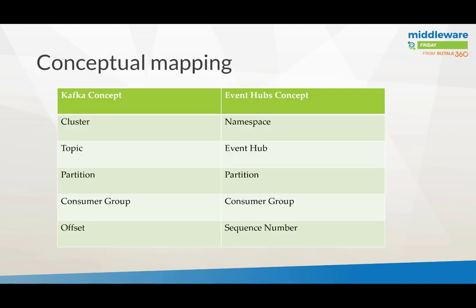If you conceptually map Kafka versus Event Hubs, the concepts align: clusters map to namespaces, topics map to Event Hubs, partitioning and consumer groups are equivalent, and Kafka offsets map to Event Hubs sequence numbers.